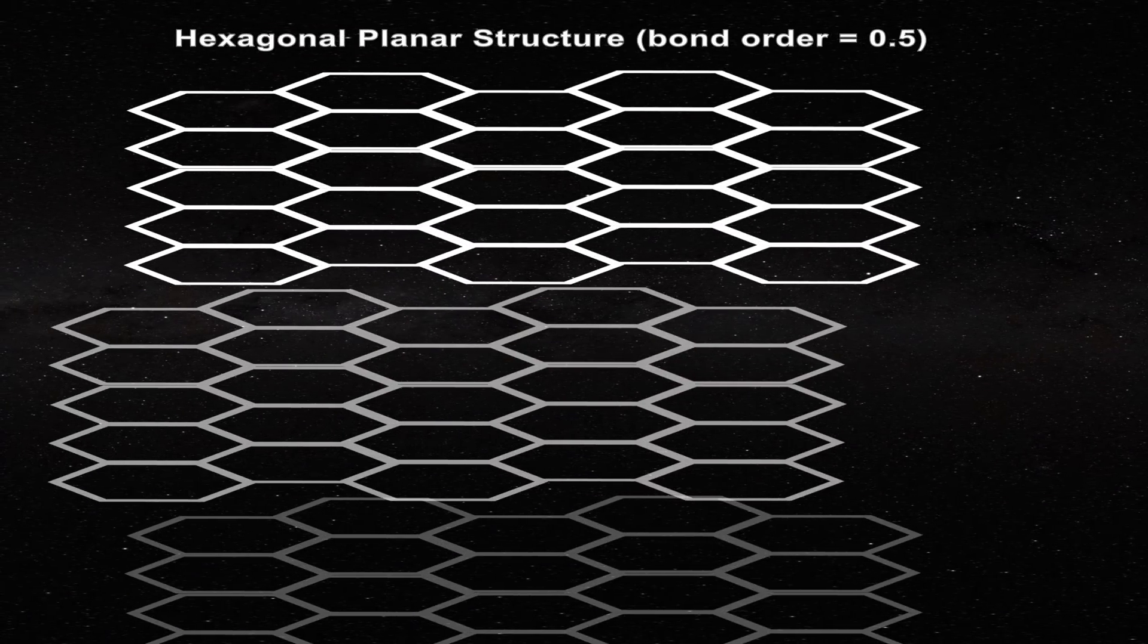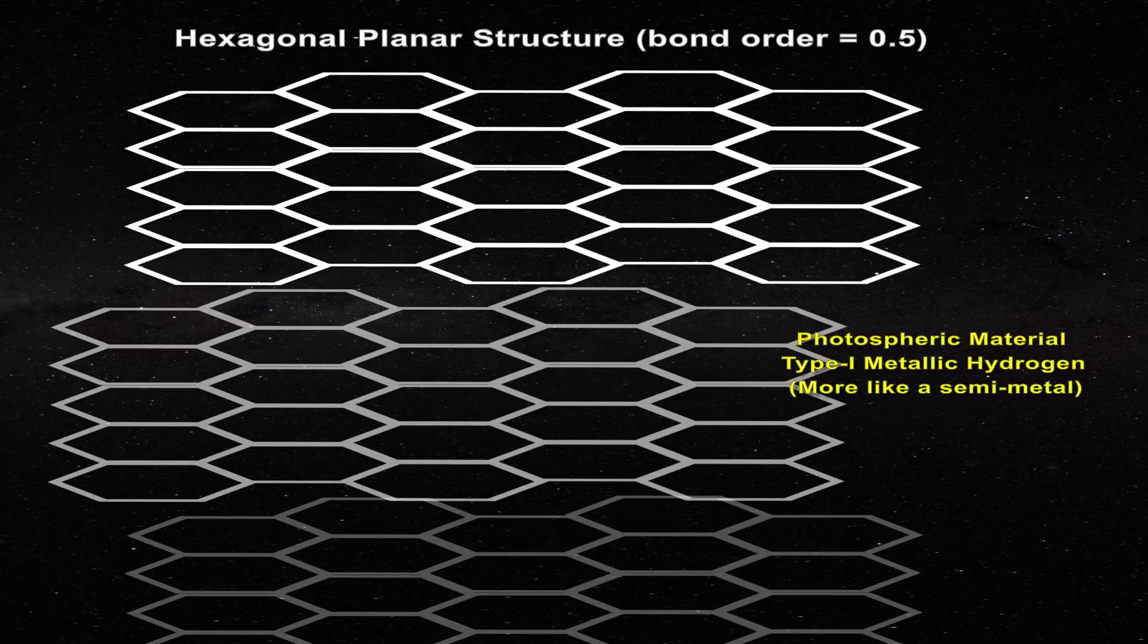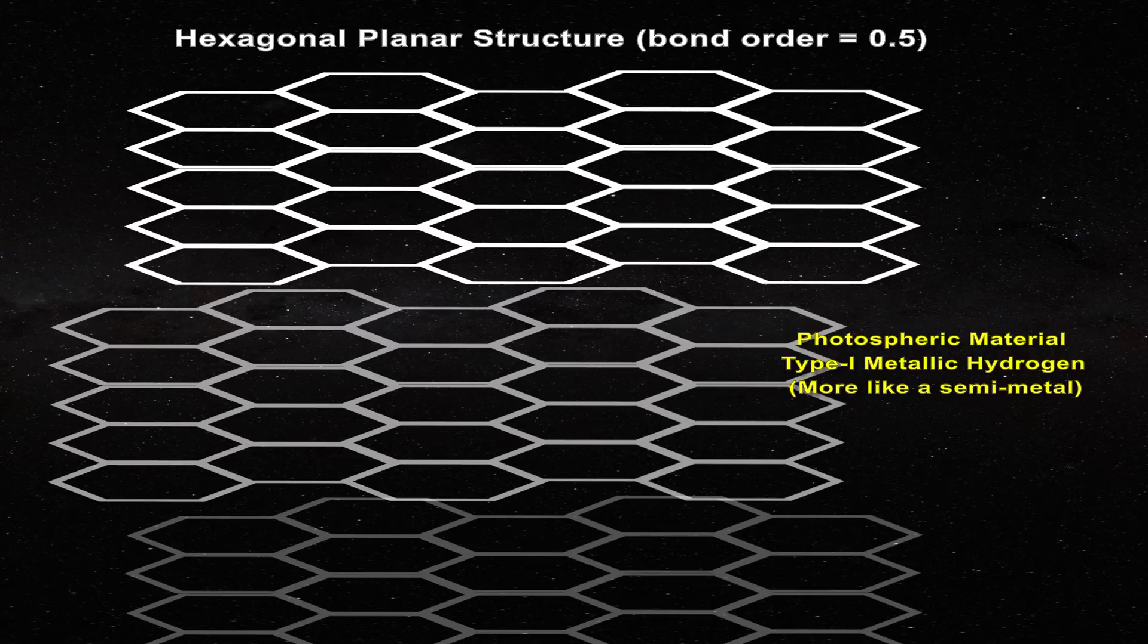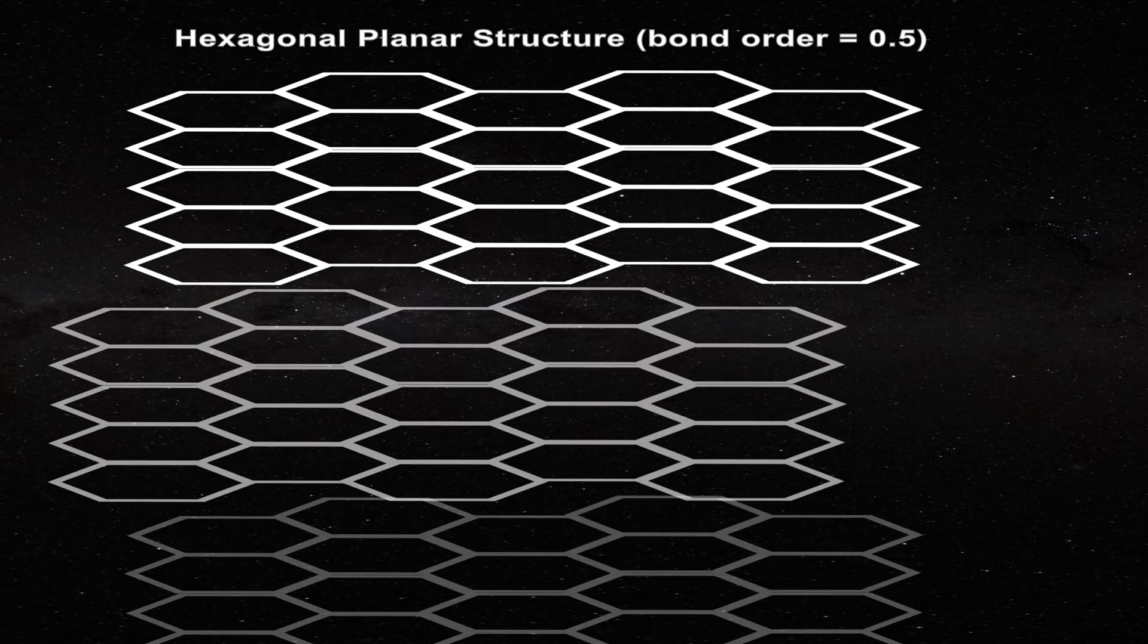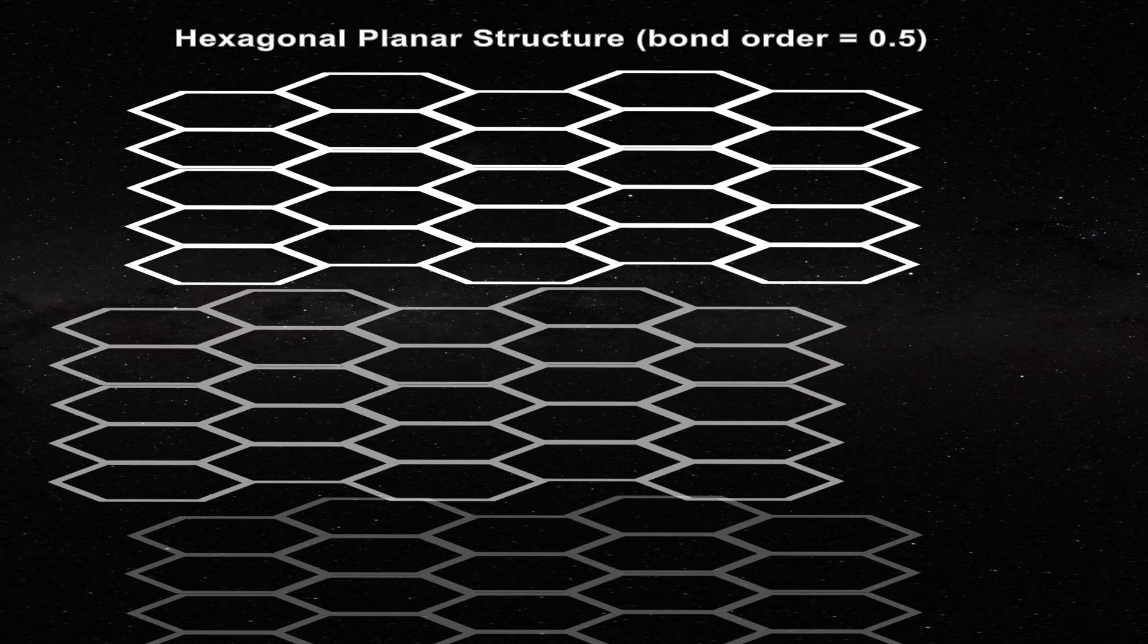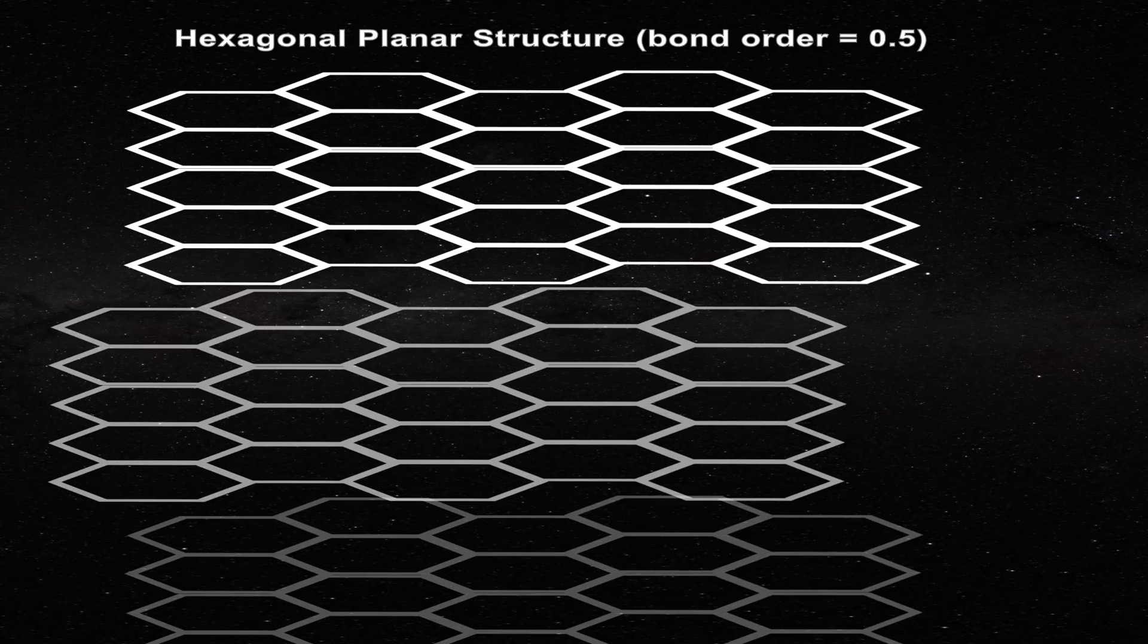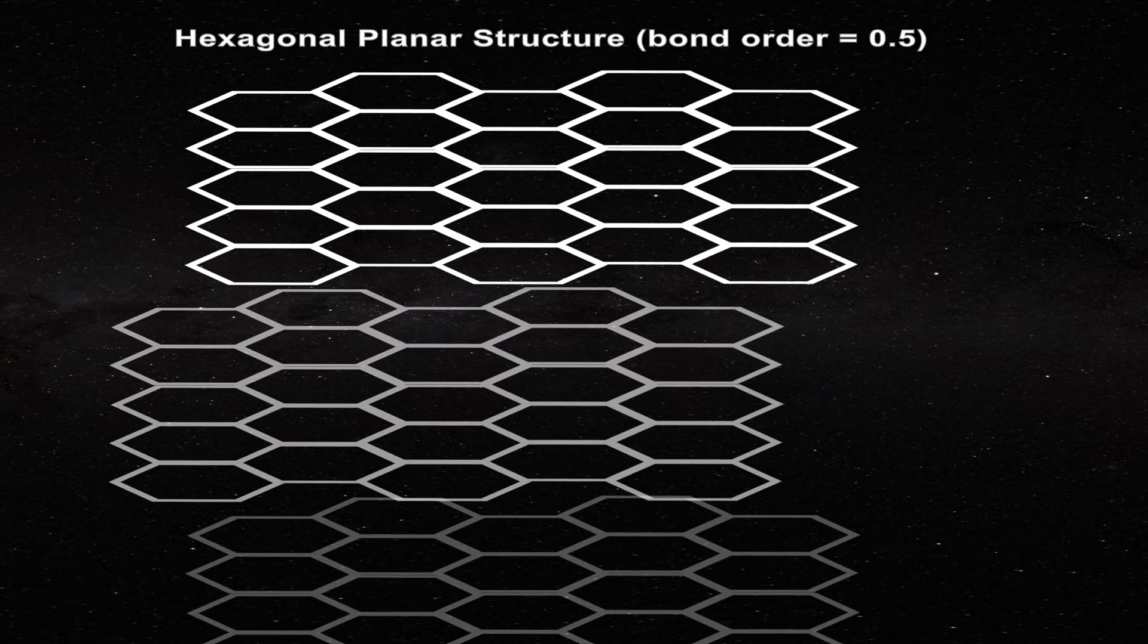In earlier videos you learned that the photosphere is likely to be comprised of type 1 metallic hydrogen which adopts the same hexagonal planar structure as graphite. Photospheric material should not be highly metallic but more like a semi-metal. As we move further below the photosphere and enter the convective zone, solar material becomes more compressed and therefore more metallic.